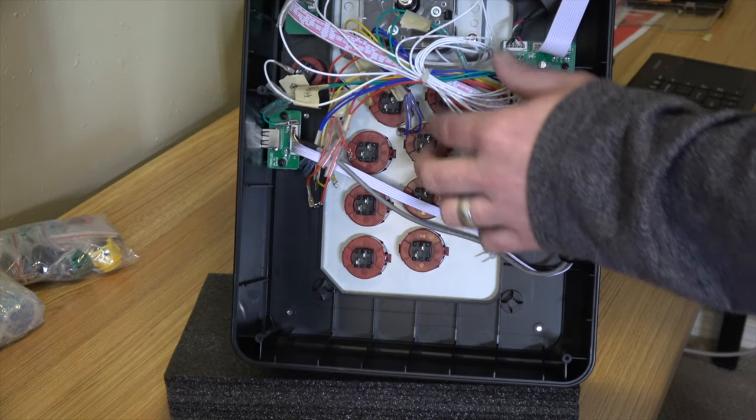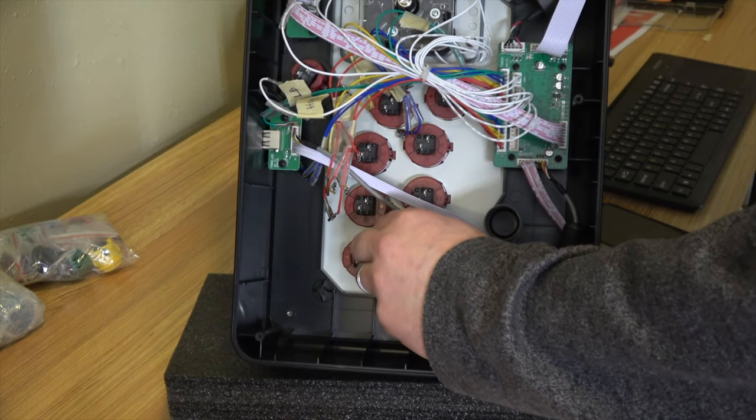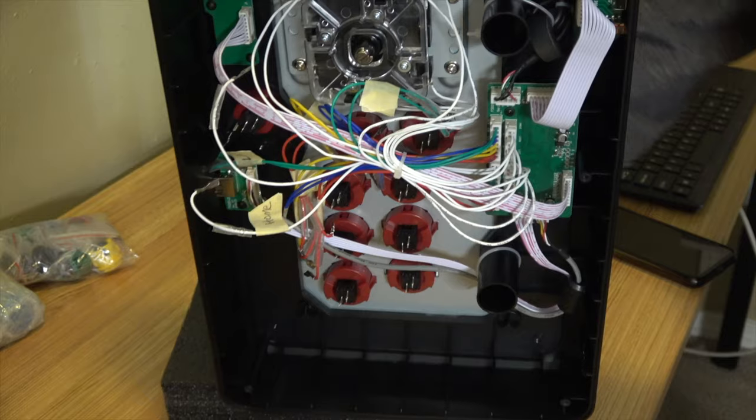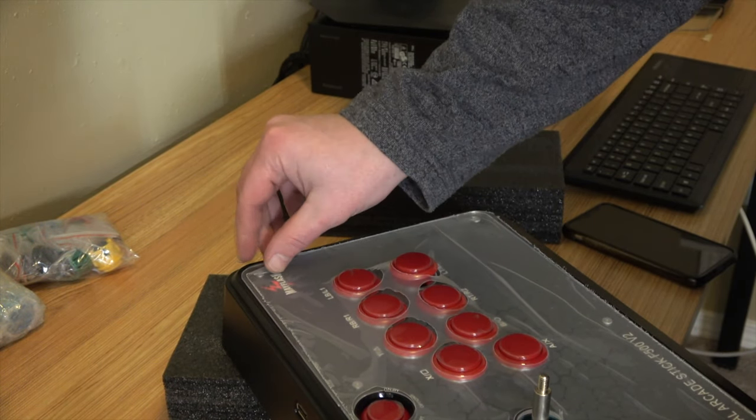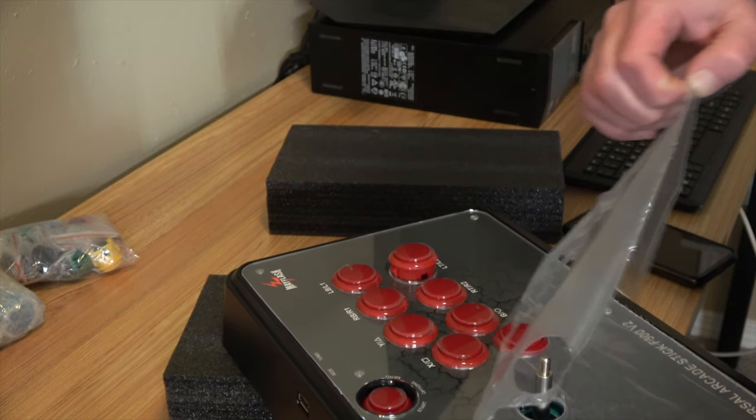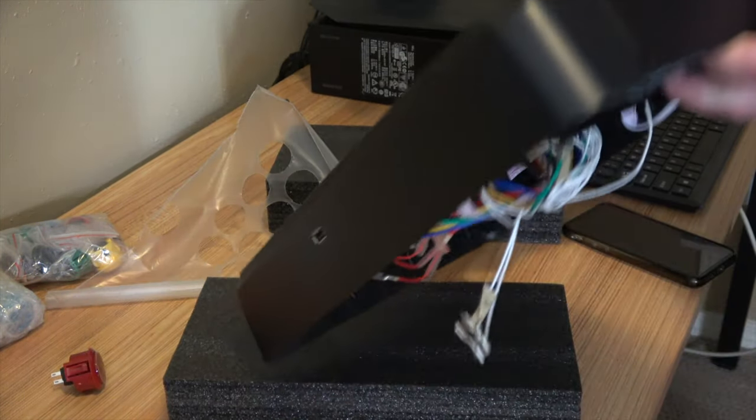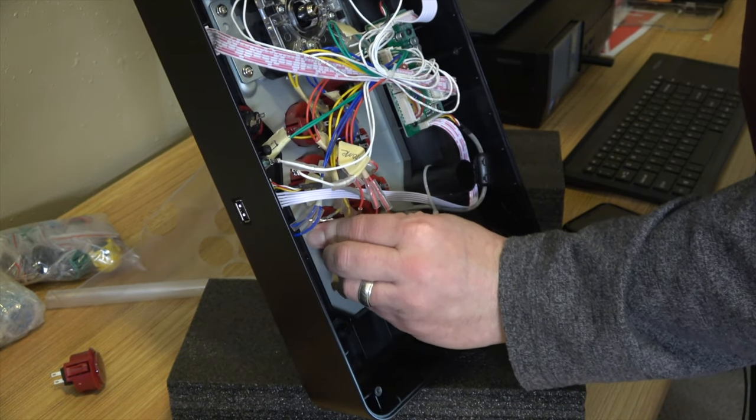And now we have everything unhooked. So, these are really easy to switch out. All you have to do is push these tabs in. Well, I think I am going to have to hit this off anyway. The buttons aren't going to come out without it. So, we're just going to go ahead and drop all of these out.